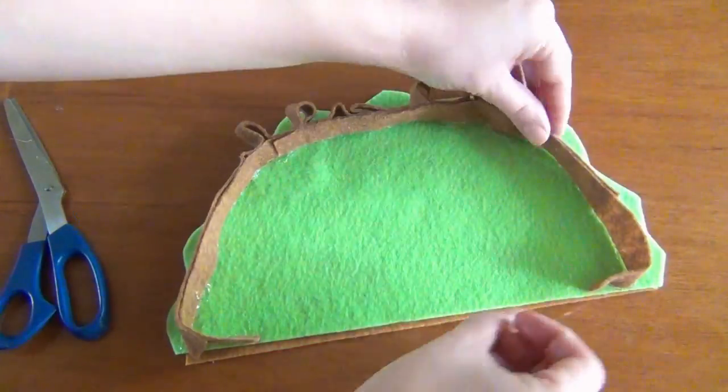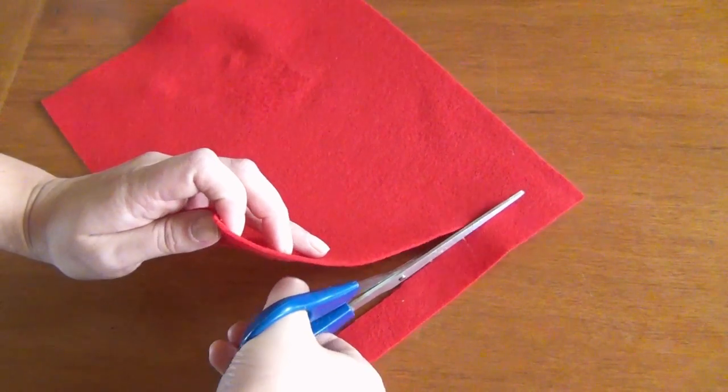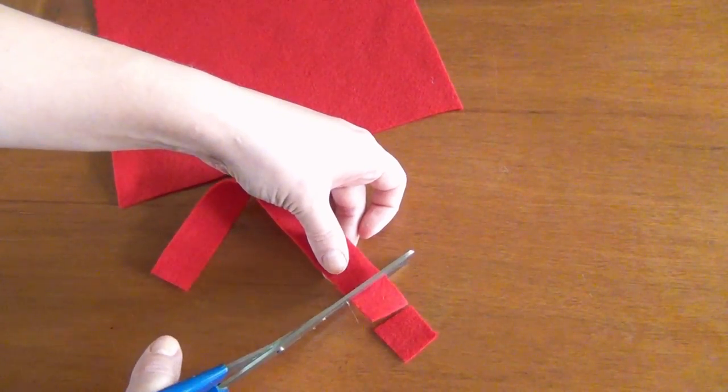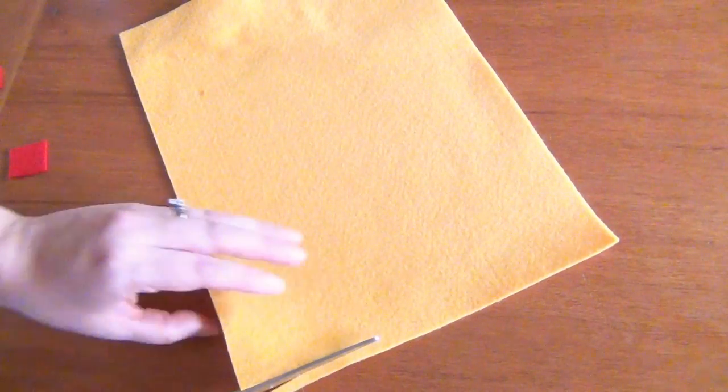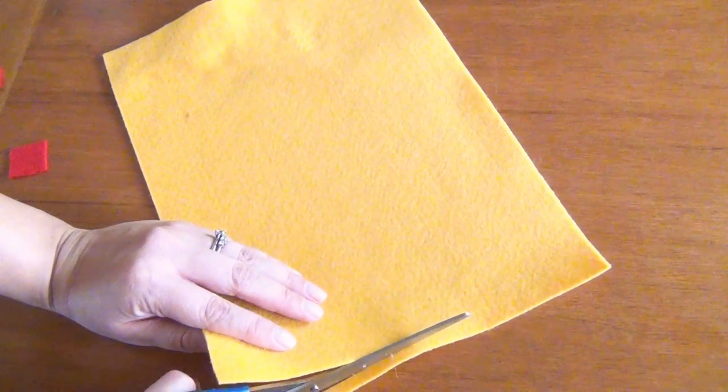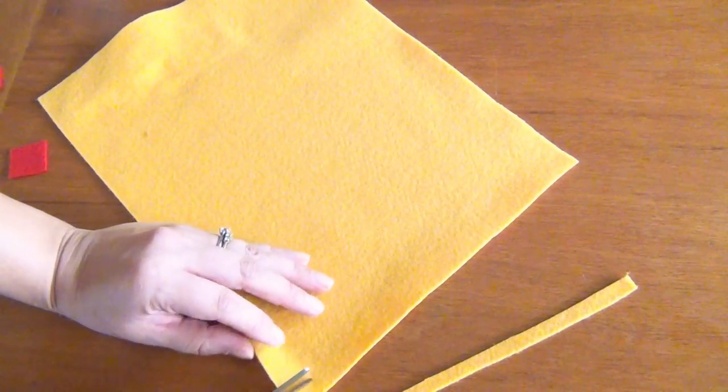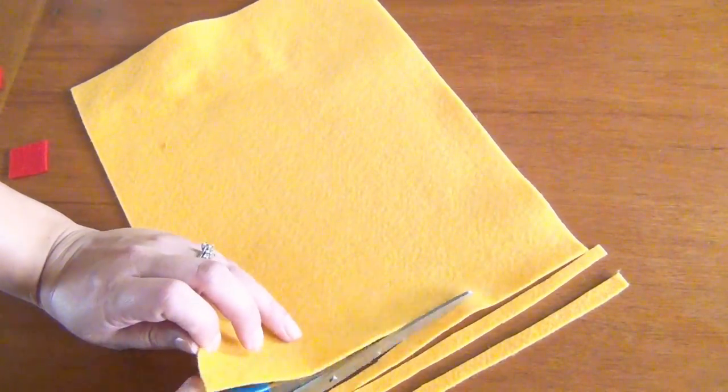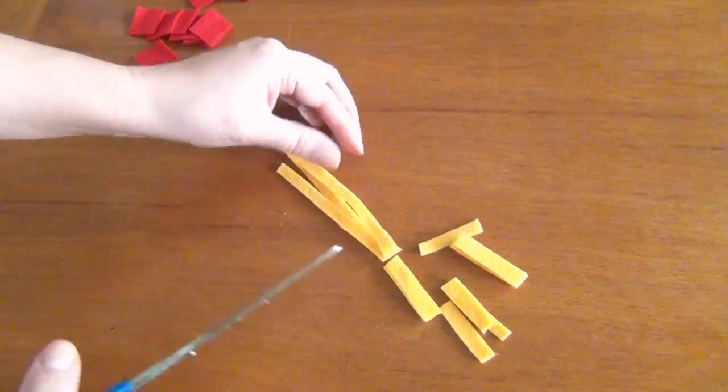Then take your red piece of felt and cut a long strip off of one side and cut that strip into little squares. These are going to make your tomato pieces to sprinkle on the top of the taco and then once you've cut those take your yellow piece of felt or you can use a white piece of felt if you prefer and cut some really skinny strips off of one side of it and once you've cut a whole bunch of those strips as many as you want, cut those into smaller pieces to make up your shredded cheese.